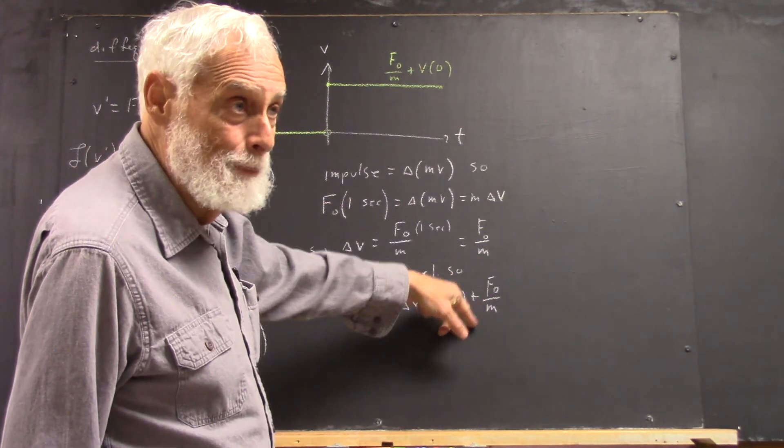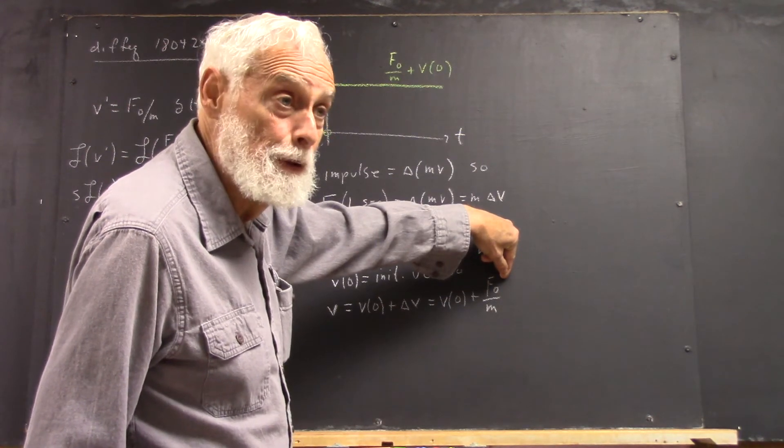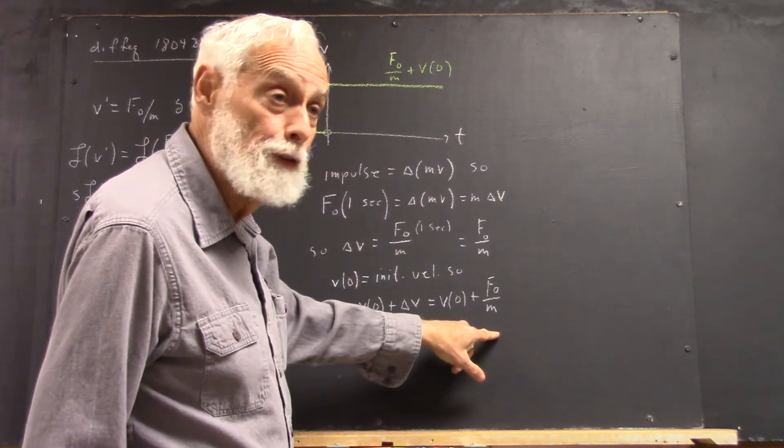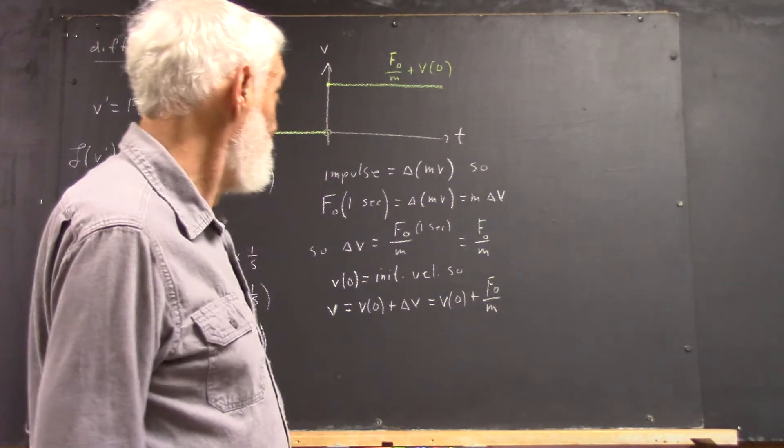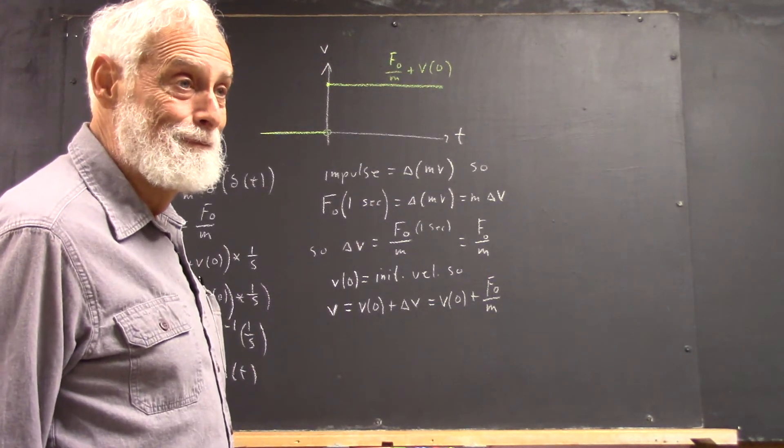Numerically, it's f naught, but now the units are units of impulse, which is divided by units of mass. Well, that's exactly what the graph says, isn't it?